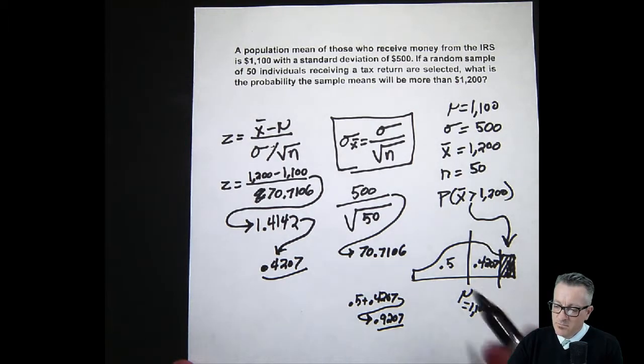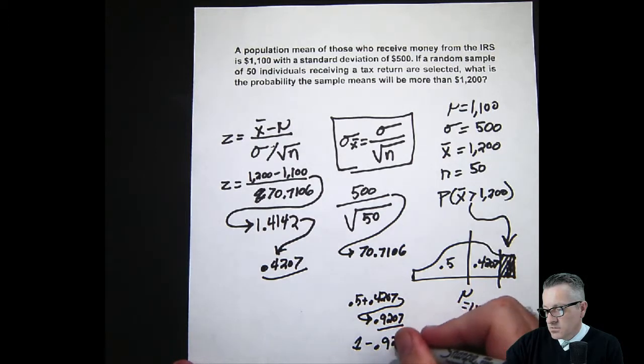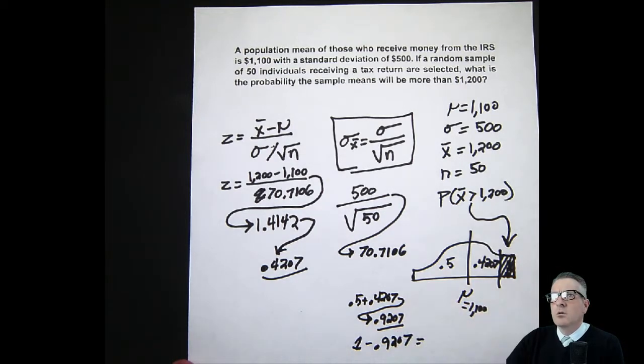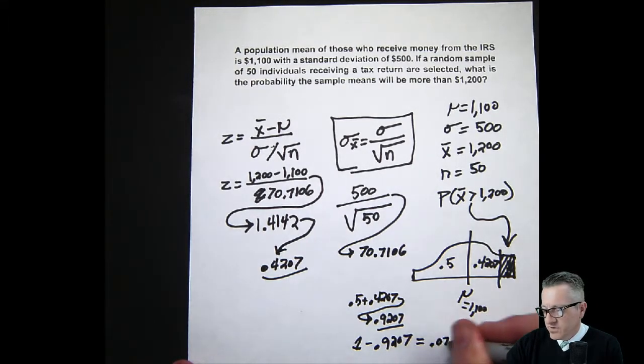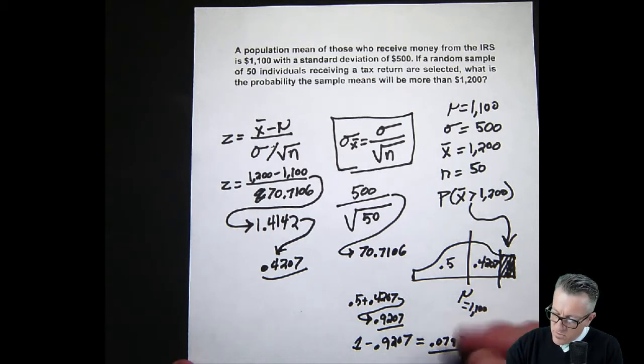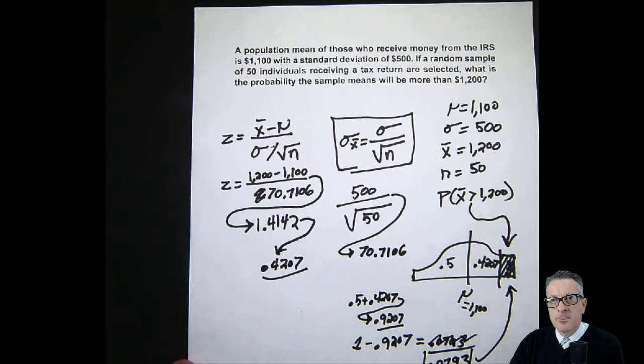That's actually the answer if we're trying to solve for less than 1200 - this whole area we just solved for. But we're solving for more than 1200, so we want to subtract it from 1: 1 - 0.9207 equals 0.0793. This would be our answer for this problem.